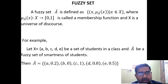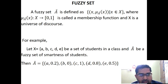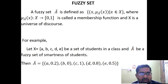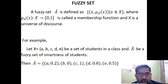Now, we enter into Fuzzy Set. What is a Fuzzy Set? A Fuzzy Set is defined as the set of all ordered pairs (x, μ(x)) such that x belongs to X, where μ(x) is a function from X to the closed interval [0,1], which is called the membership function. And what is capital X? It is nothing but the universal set.